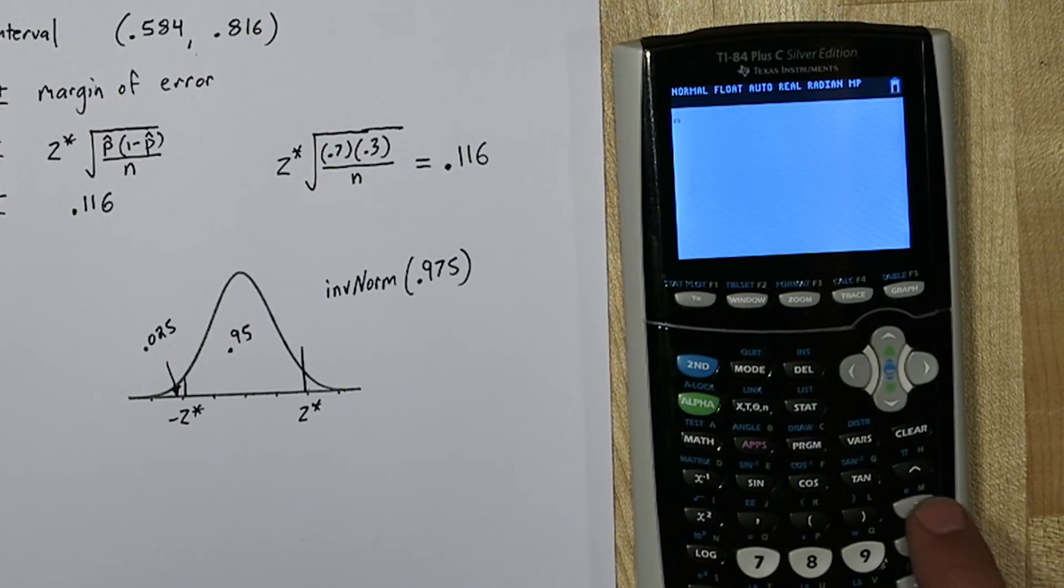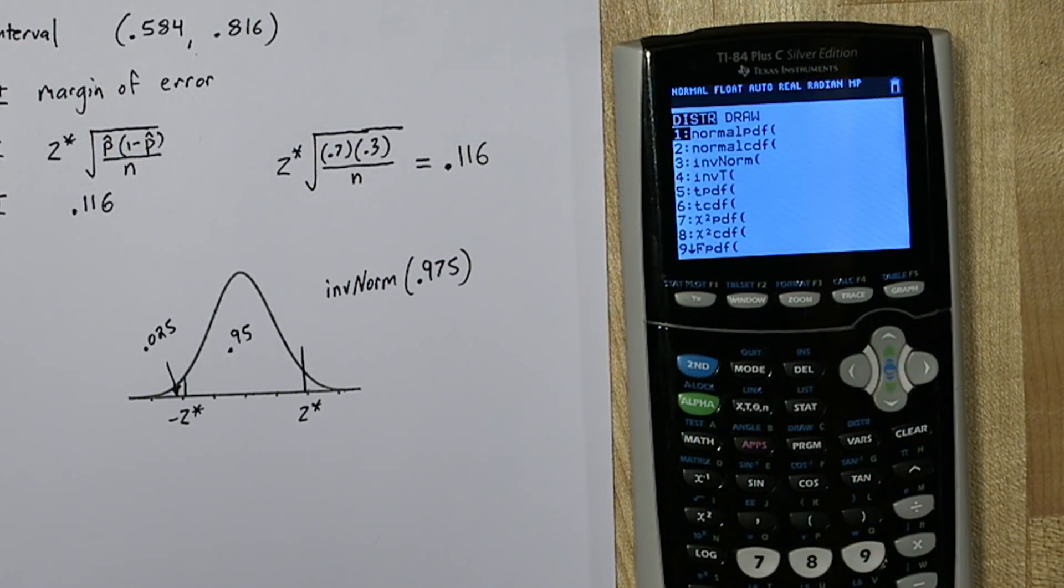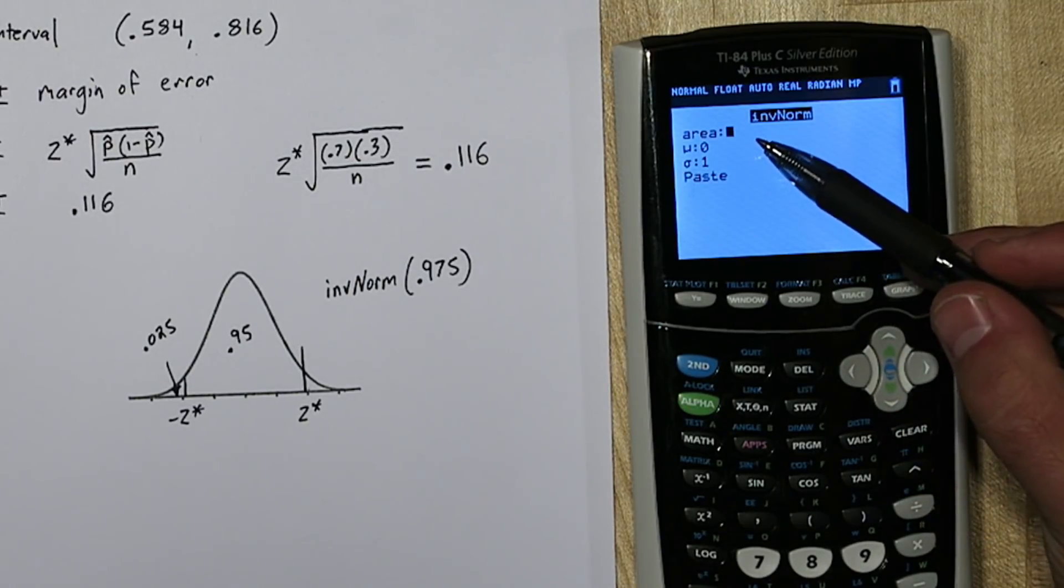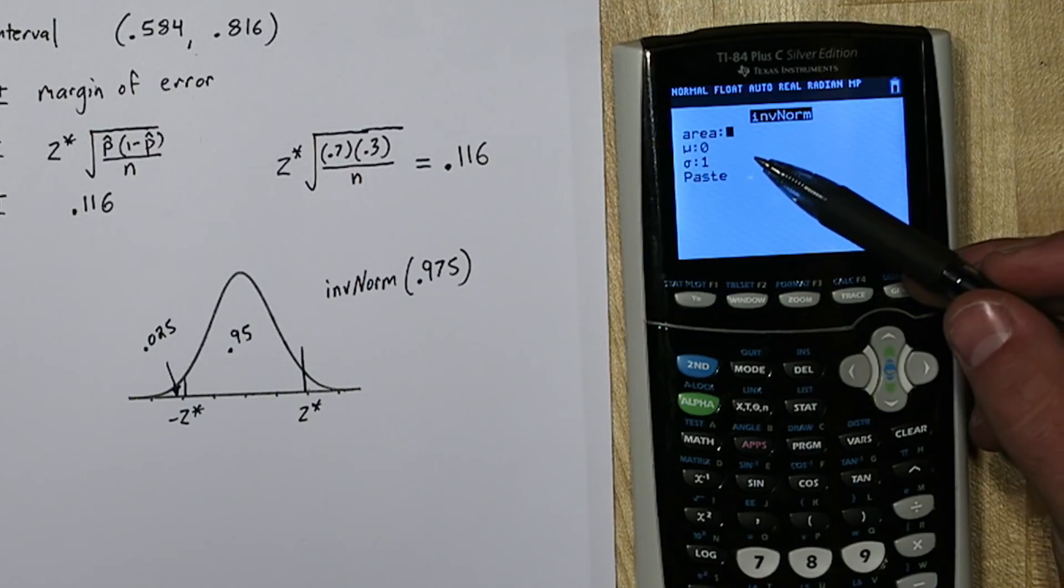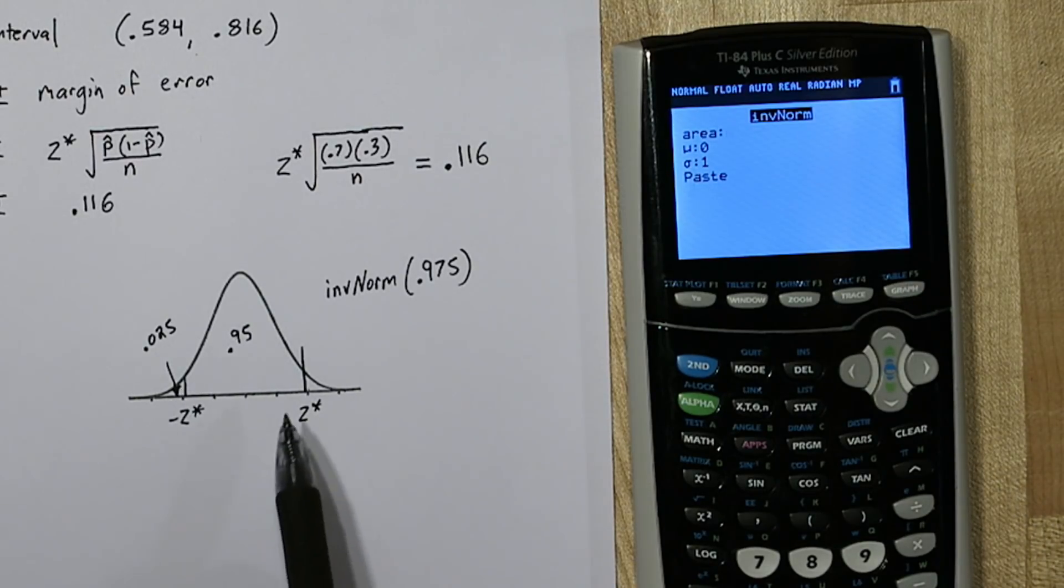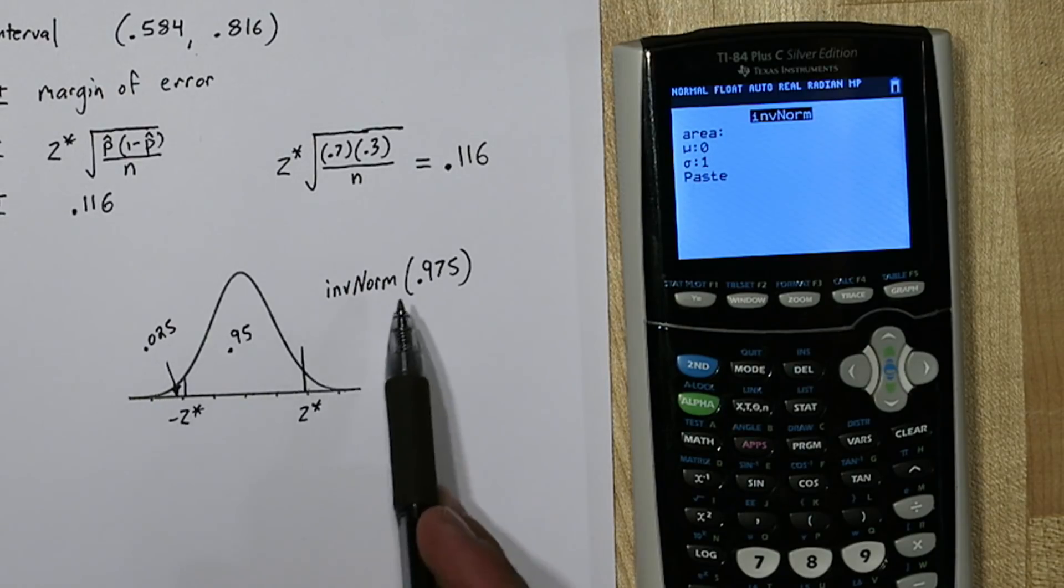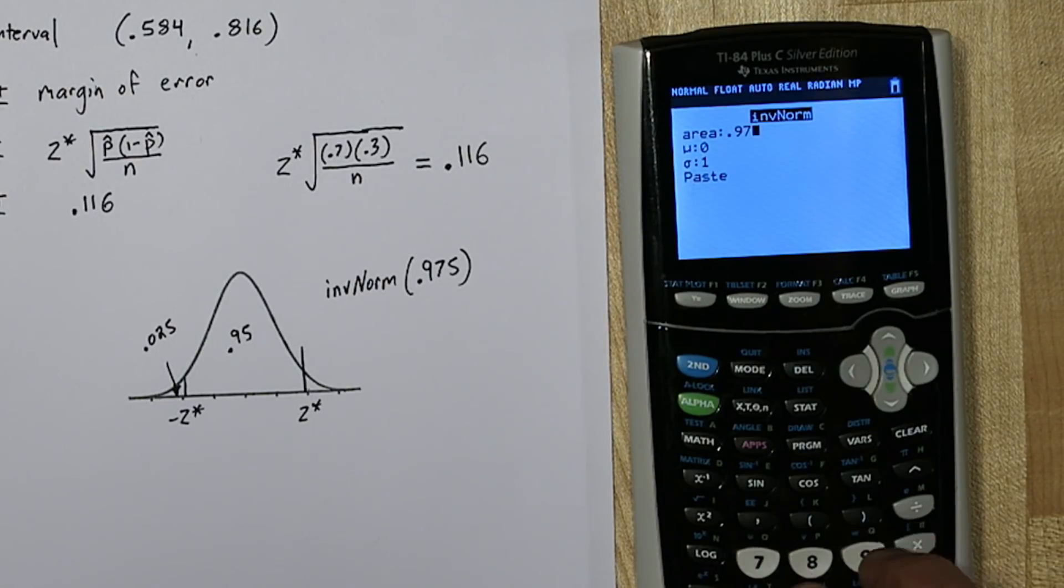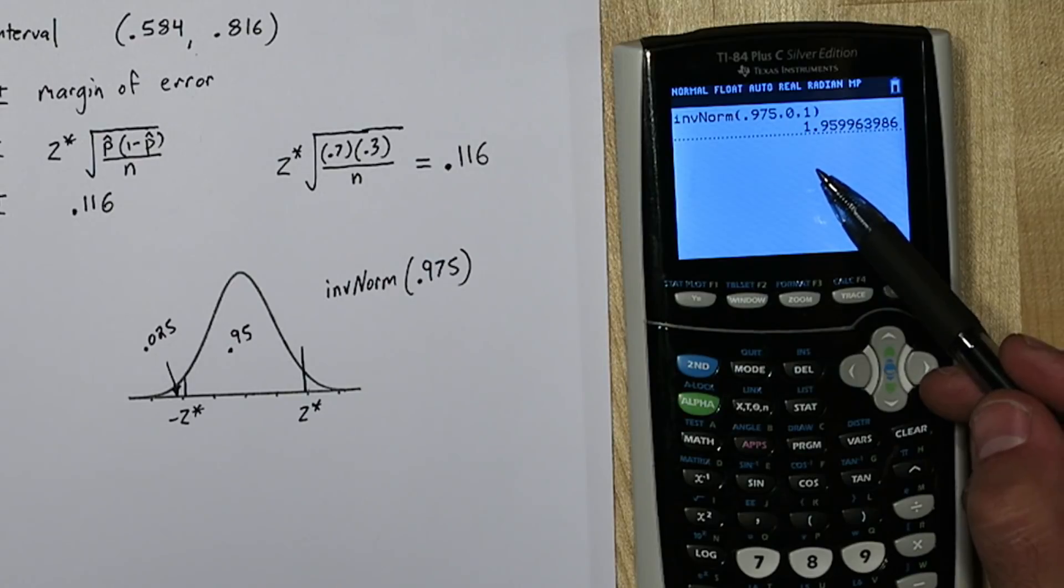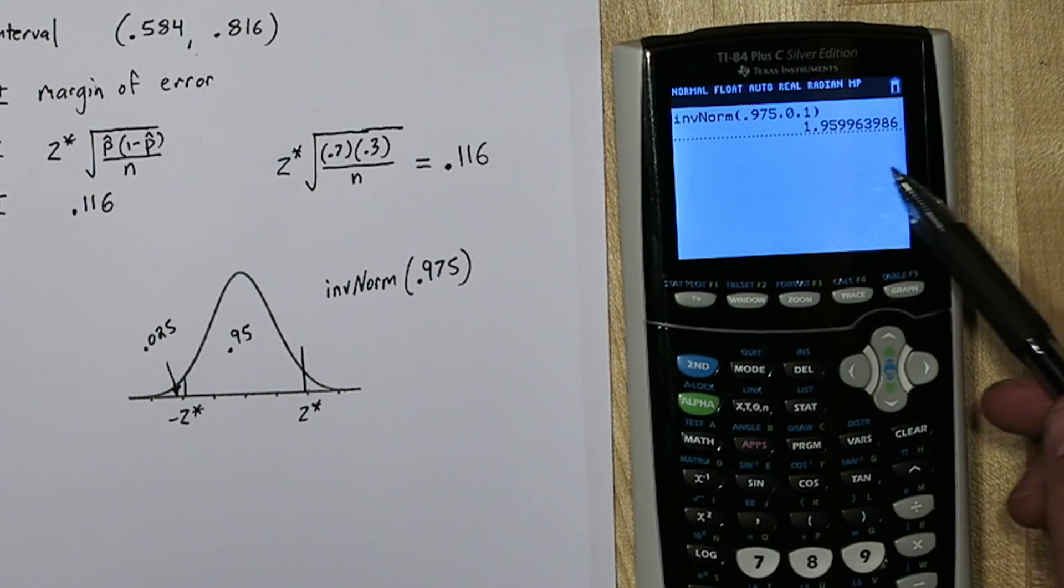If you press 2nd then VARS, you get to the distribution menu, and go to inverse norm. It's going to ask for the area, and what it wants is the area to the left of your cutoff point. So here's our cutoff point. The area to the left, like we just discussed, is 0.975. So that tells us z-star is 1.9599.